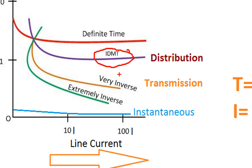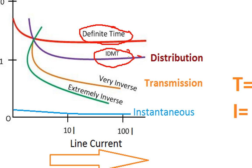That is the IDMT relay. If it is the inverse definite mean time, this is an updated function. If it is 10 seconds delay, the relay will operate slowly — it is very slow and operates in parallel depending on the current rating.